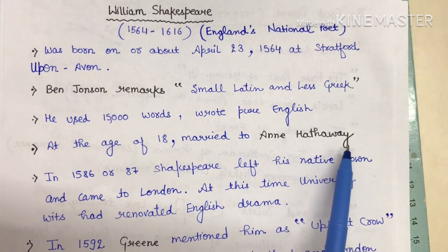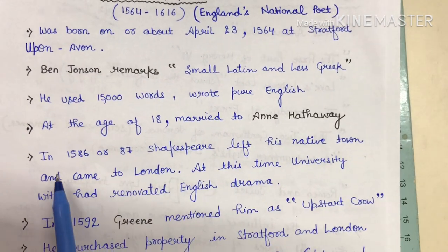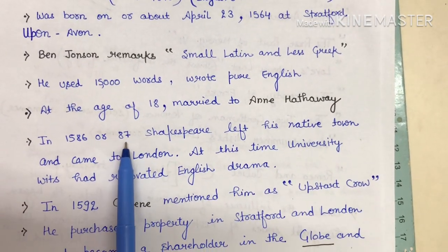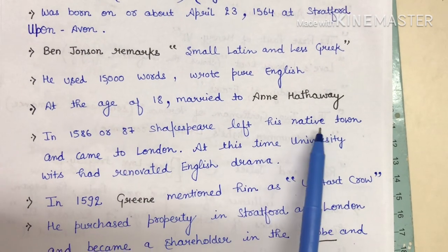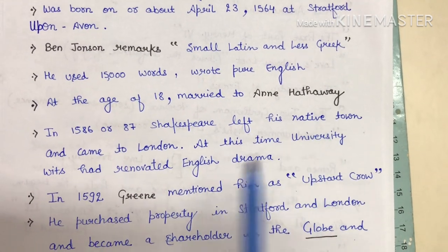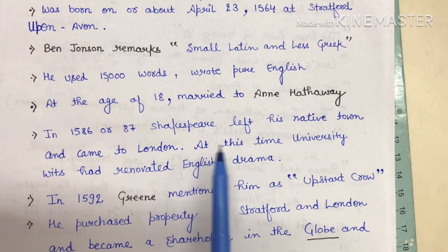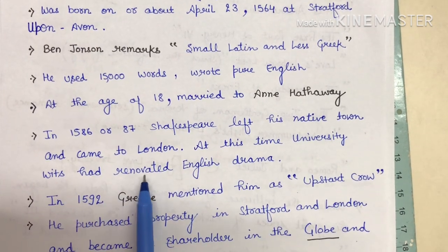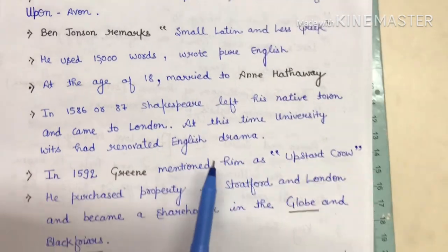Shakespeare at the age of 18 got married to Annie Hathaway, and she was eight years senior to him. In 1586 or around 1587, Shakespeare left his native town Stratford and came to London. During this period, the University Wits had already renovated English drama.